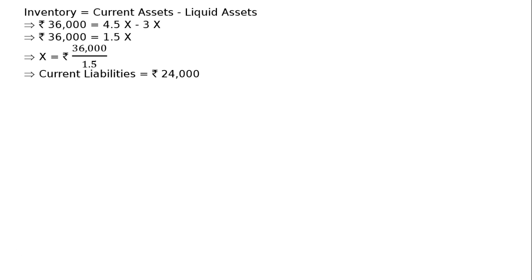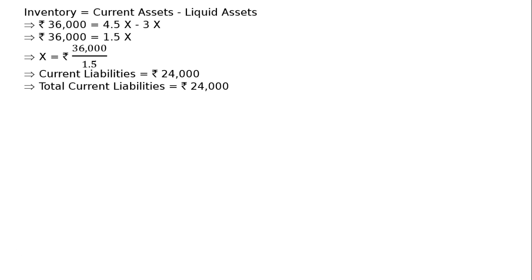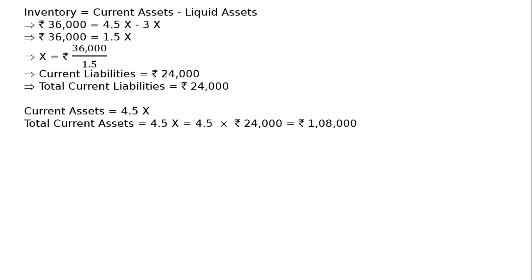This is one part of the answer. Total current liabilities is ₹24,000. Then, current assets is equal to 4.5X, that is, 4.5 multiplied by ₹24,000, which is equal to ₹1,08,000. So in this question, we have found both current liabilities and current assets.